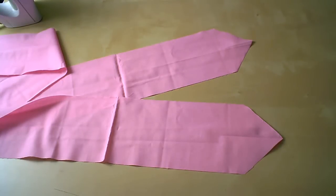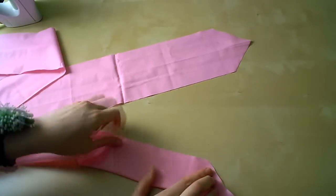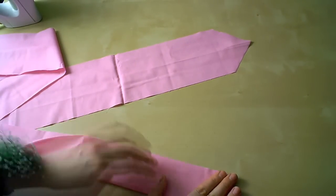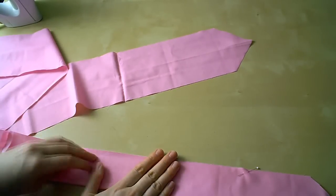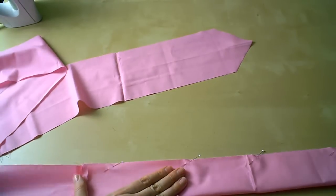Starting at one of our nice pointy ends, we're going to start folding it right sides together, and pinning along the raw edges. Pin pin pin until we get all the way to the other end. Before we sew this sucker, fold the whole long thing in half, and mark the center with a special pin or a fabric marker.